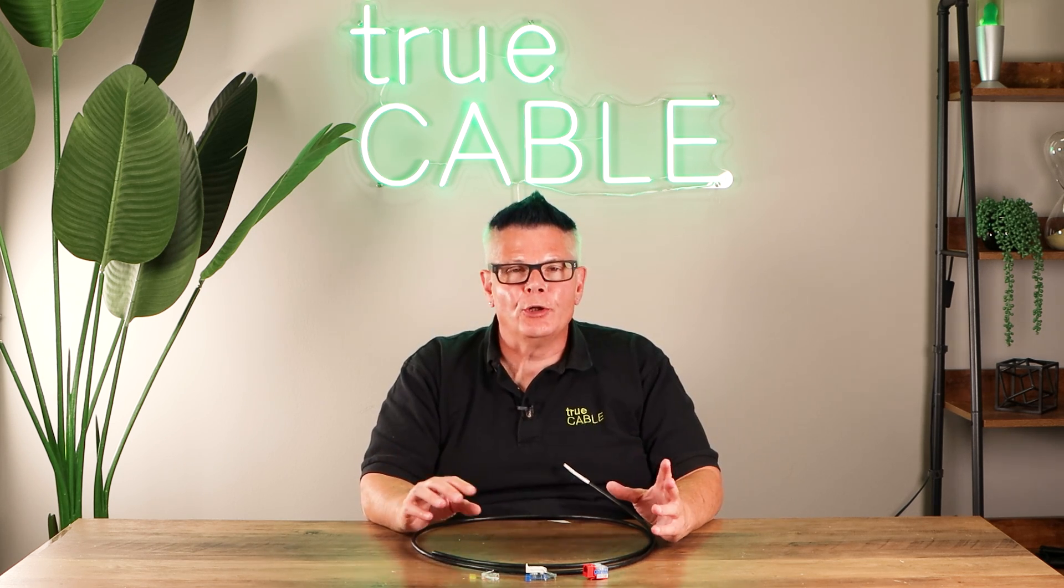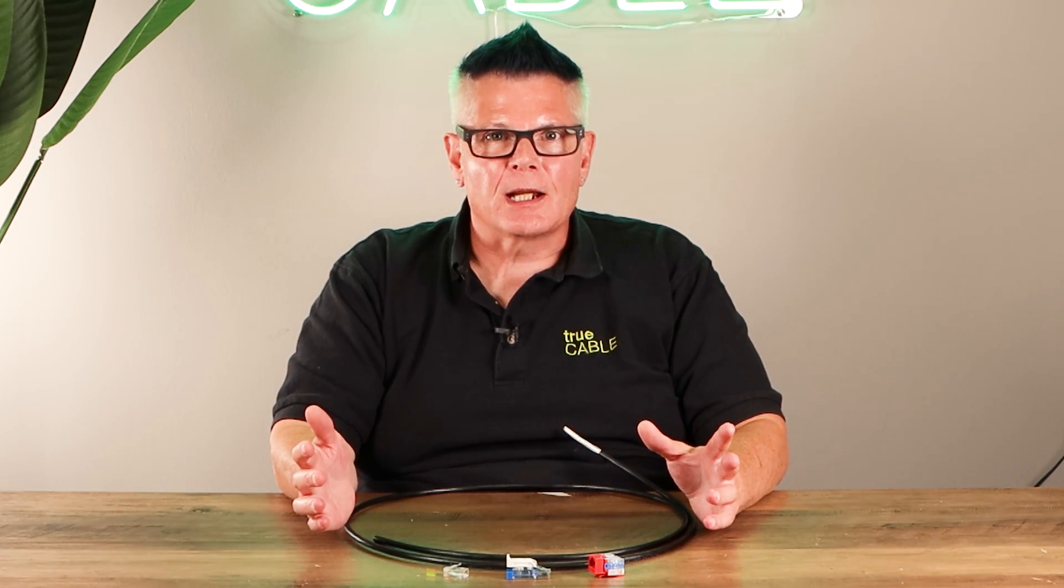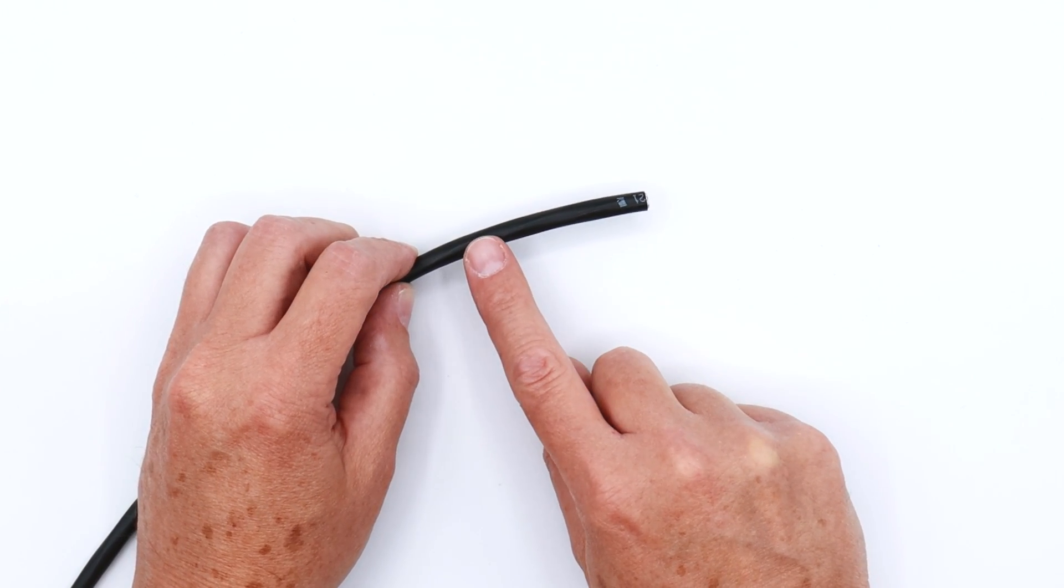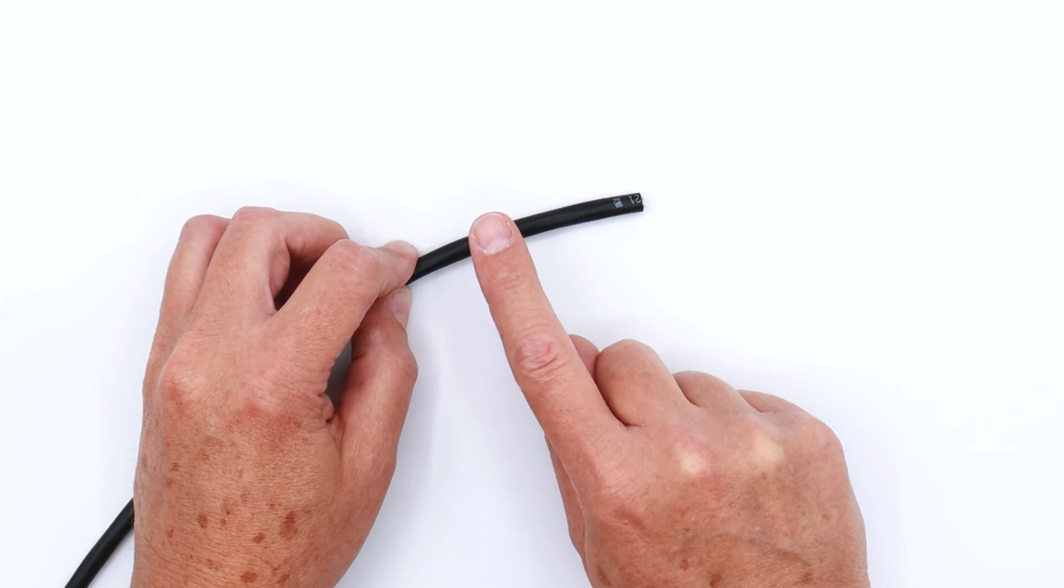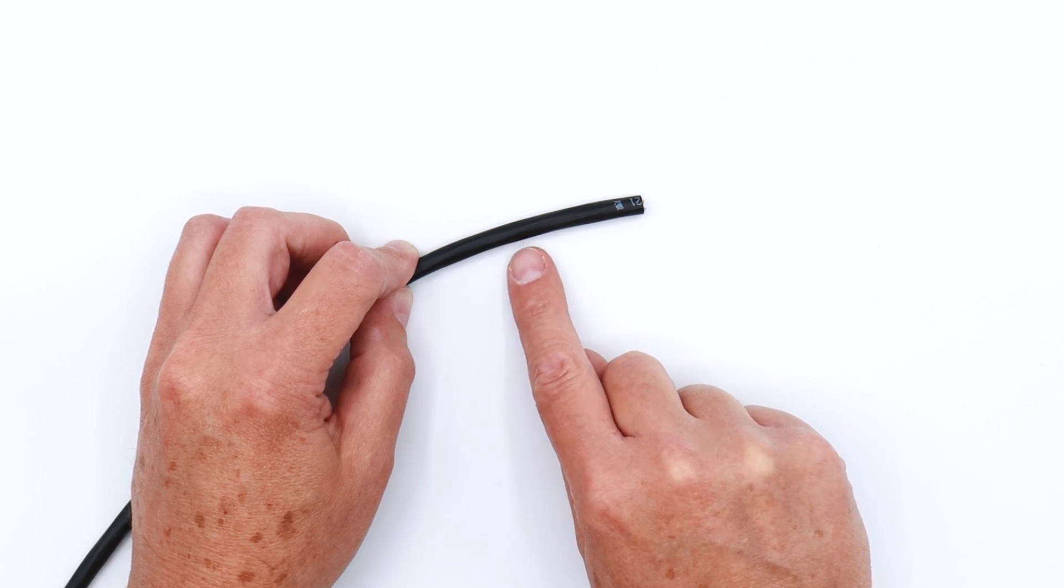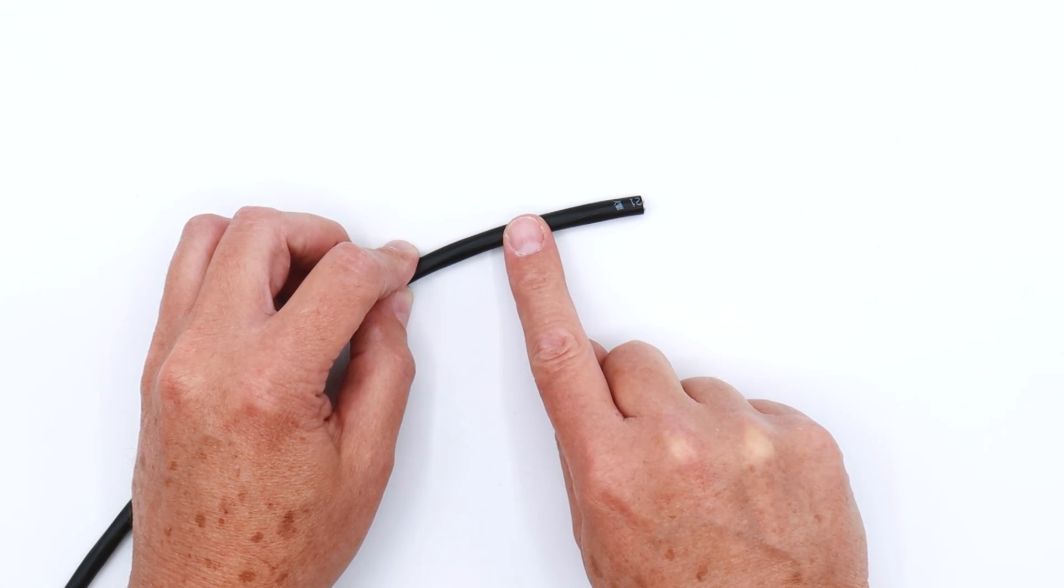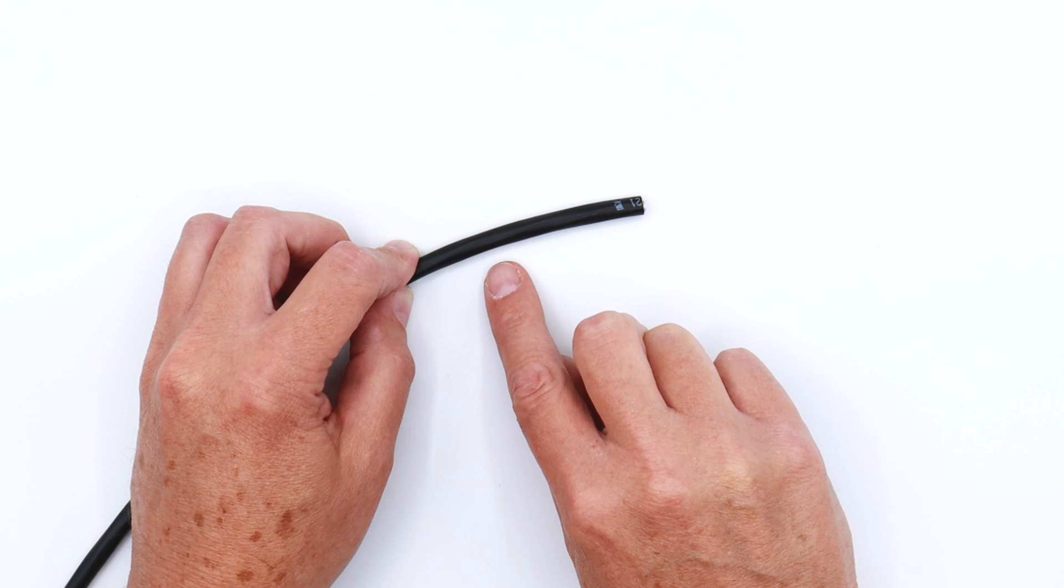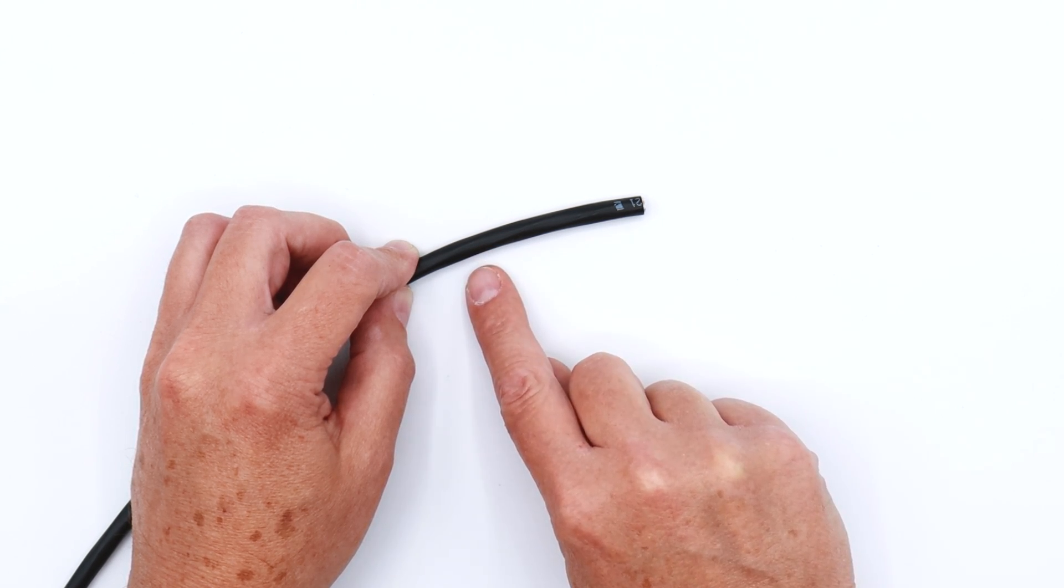Anyone that has watched our content for the last year or so knows that we are huge advocates of IDC style terminations. One of the things that you should be aware of when dealing with Category 6A cable is that certain types of terminations lend themselves to working best with Category 6A, especially if you're pushing the cable from 5 gigabit and above, or especially 10 gigabit.